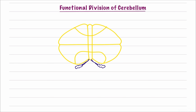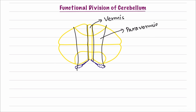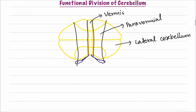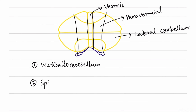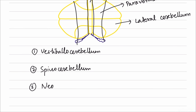Now we'll discuss the functional division of cerebellum, which is important for understanding physiology and dysfunction. There are two interrelated classifications. The first is based on location: there is the vermis in the middle, then the paravermial region lateral to it, and then the lateral cerebellum. The second classification identifies three divisions: vestibulocerebellum, spinocerebellum, and neocerebellum.